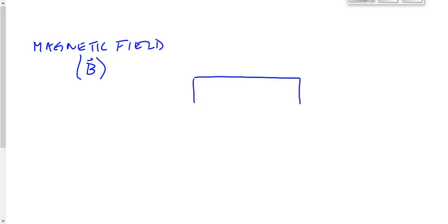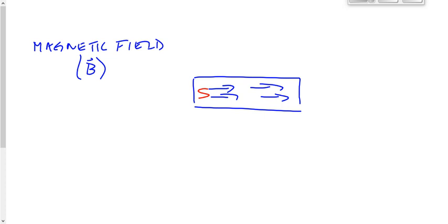Do you remember which way the domains point? I've got them drawn from left to right here. Based on the direction of these magnetic domains, which end is north and which end is south? Domains point from south to north. Inside the magnet, the magnetic field points in the direction of the domains — from south to north.